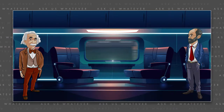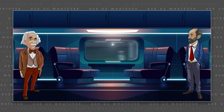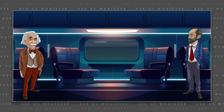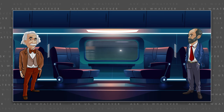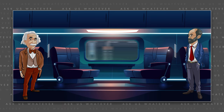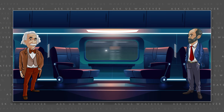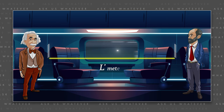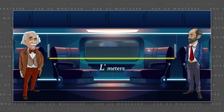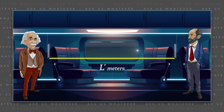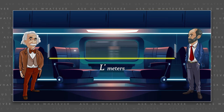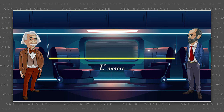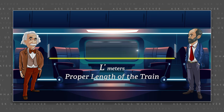Let's say we make a light clock that bounces light between two mirrors. But this time, one is attached to the interior wall at the back of the train car, and the other is attached to the interior wall at the front of the train car. Let's say that the distance from the back to the front is L' meters. Regardless of whether the train is stationary or moving, if observers on the train measure this distance, it will always appear to them to be L' meters long. We will call this the proper length of the train.